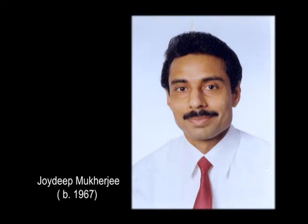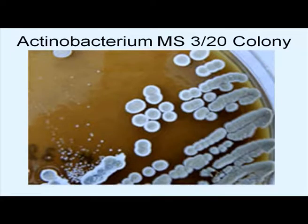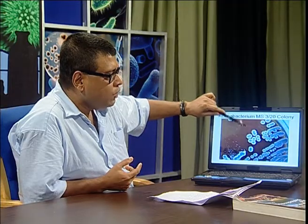This bacteria is our own, as it was denoted by Mukherjee et al. from the Sundarbans. This is an actinobacteria — they named the colony MS3 — a typical actinomycetes colony isolated from the Sundarbans brackish water. Importantly, it is producing a secondary metabolite that can kill multidrug-resistant bacteria. So we still have different microbes which have not been properly explored till date.